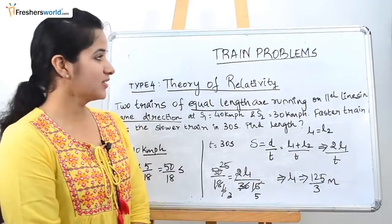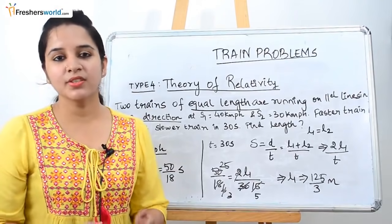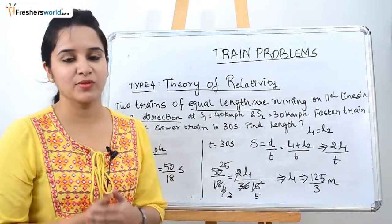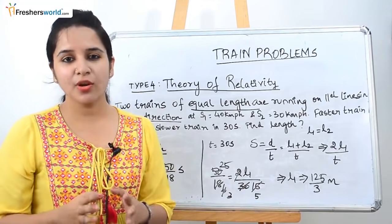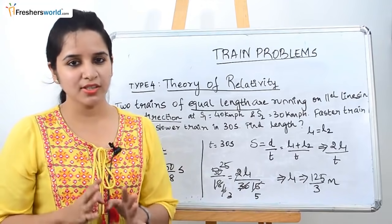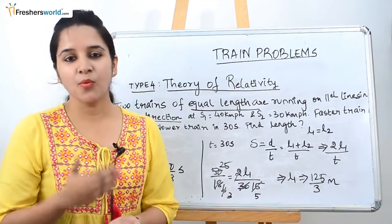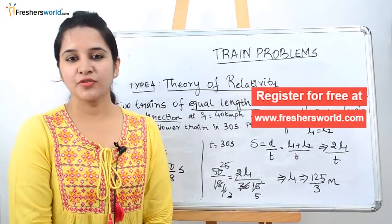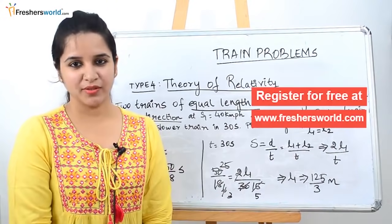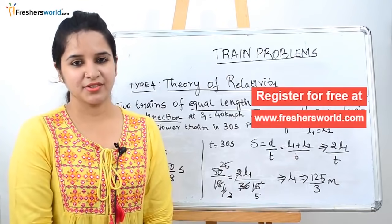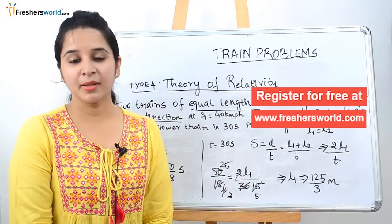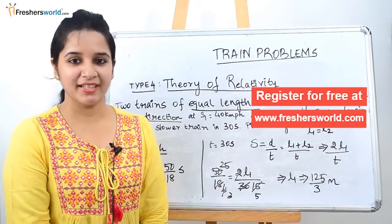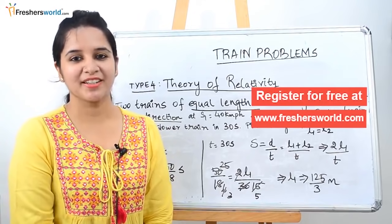This is the 4th type in train problems. In the previous video we covered 3 types, and this is the 4th — the theory of relativity. If you are thorough with all four types, there is nothing more they can ask in any train problem in any aptitude exam. If you are looking for a job, kindly register at Freshersworld.com. We are coming up with many interesting aptitude sessions, so please like this video and subscribe to our YouTube channel. Thank you.